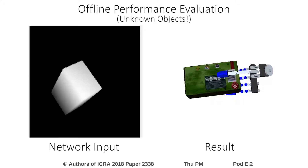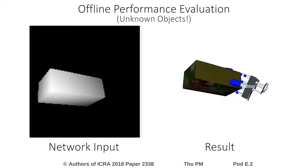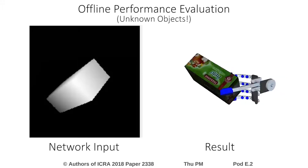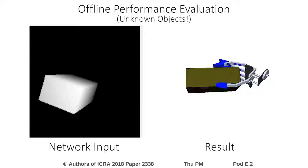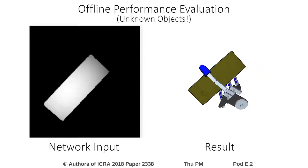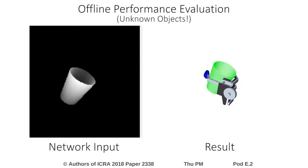The network is able to handle objects of different shape and size. By computing a full end-effector configuration, this approach is furthermore capable of arbitrary approach directions to the object, rather than just a single one.